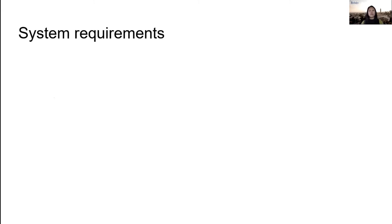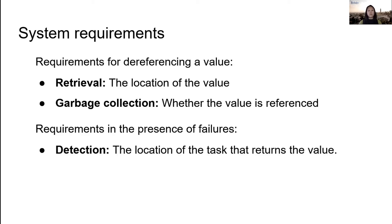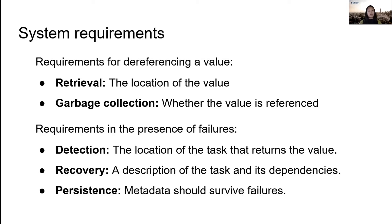To make this concrete, let's think about the requirements for dereferencing a value. At minimum, we need to know where a value is located and whether it's still referenced. Of course failures complicate things. First, we need to be able to detect a failure, and that means we need to record the location of a task before it starts executing. That way, if a worker dies, we can determine if there were any pending tasks on that worker that need to be re-executed. Second, we need to record each object's lineage, or the tasks that were executed to create the object. Similar to existing systems for distributed futures, we can then re-execute this lineage upon a failure to recreate the object. Finally, the system itself has to be fault tolerant, meaning that all of this information must be able to survive failures.